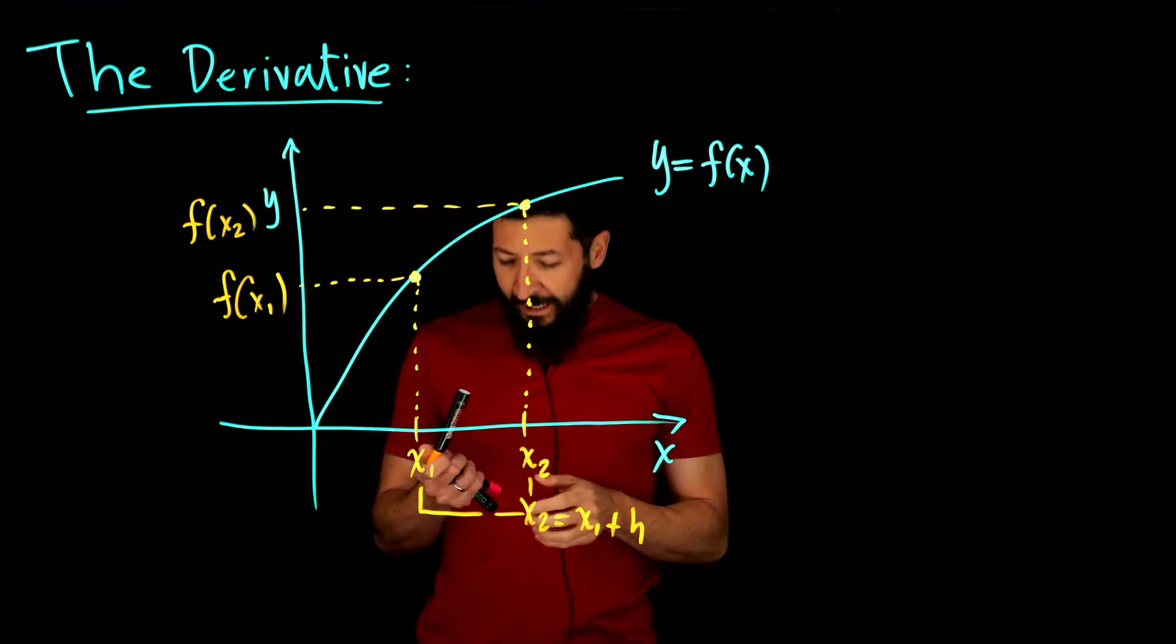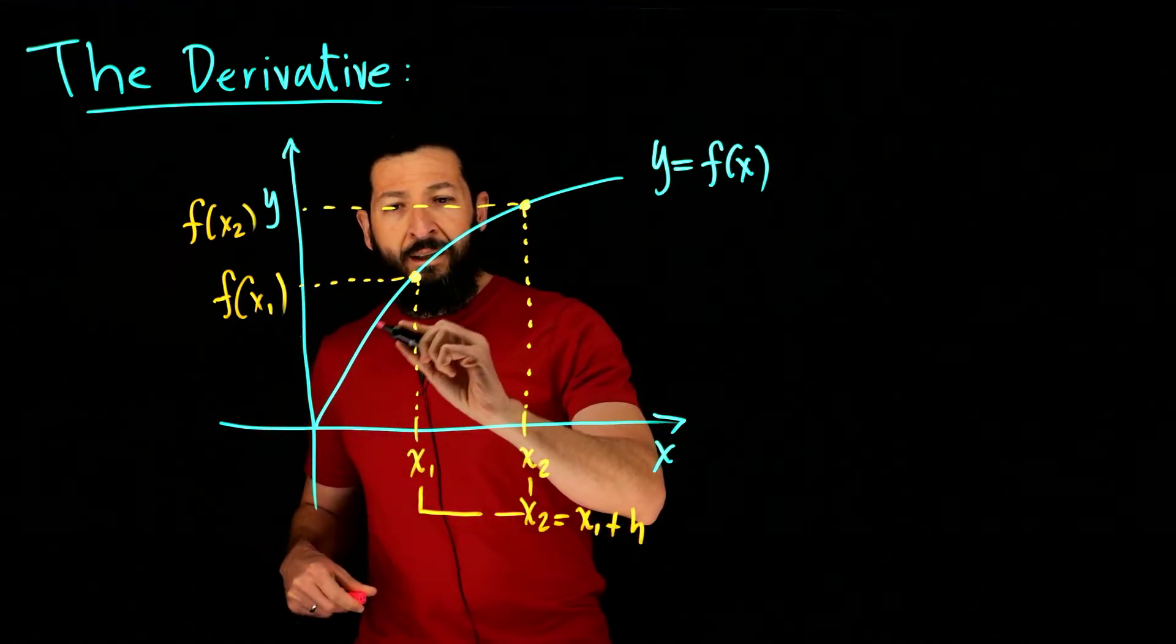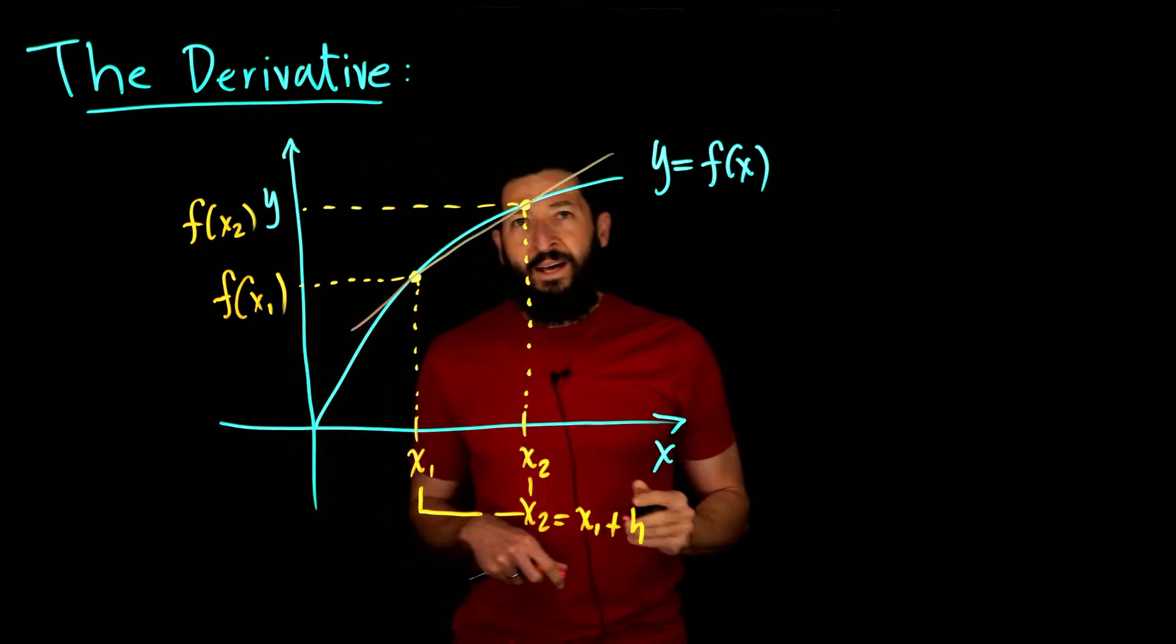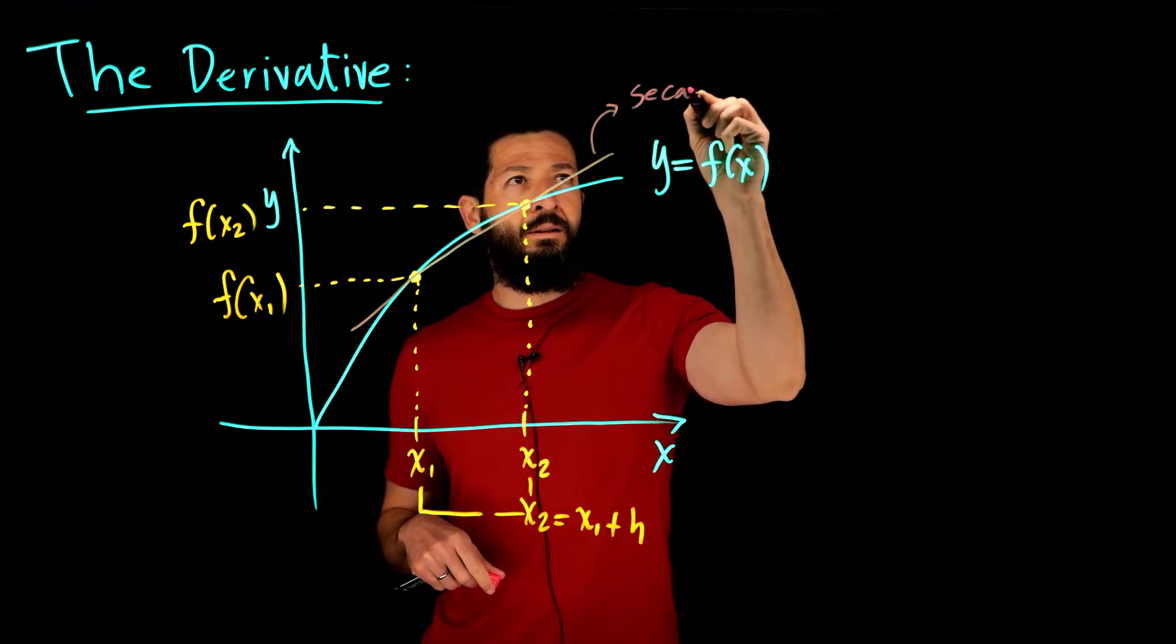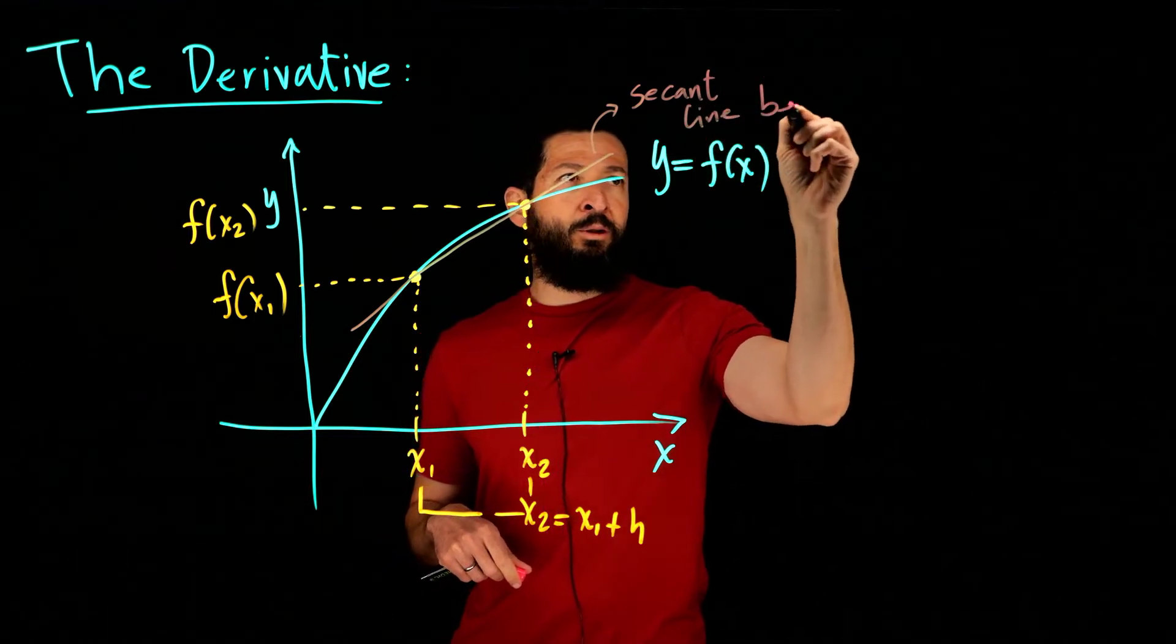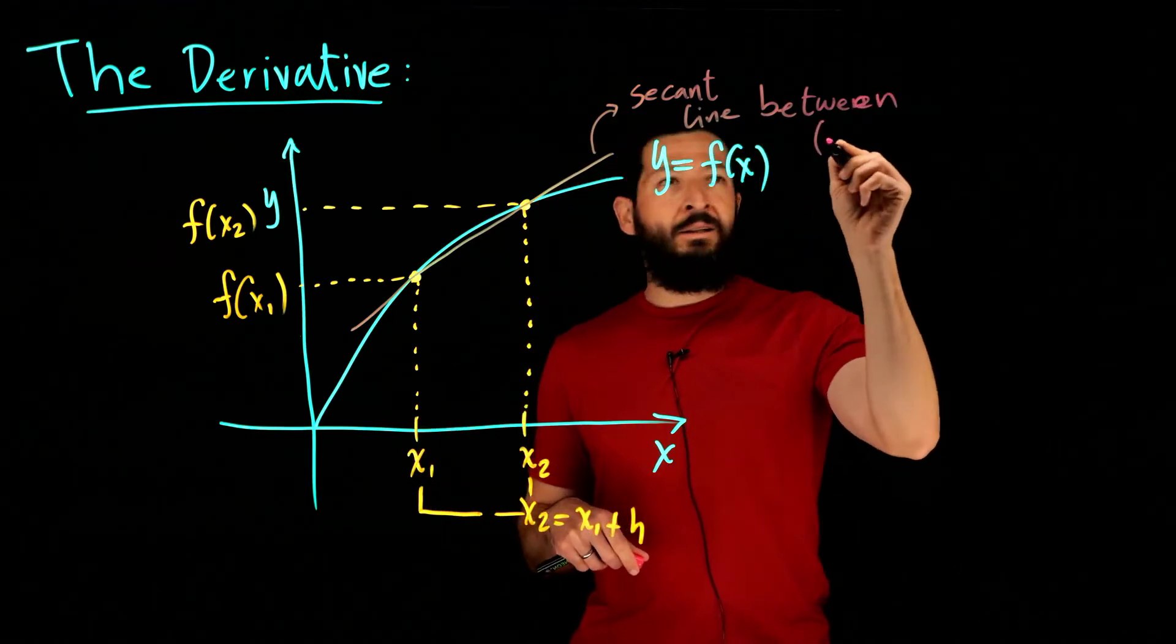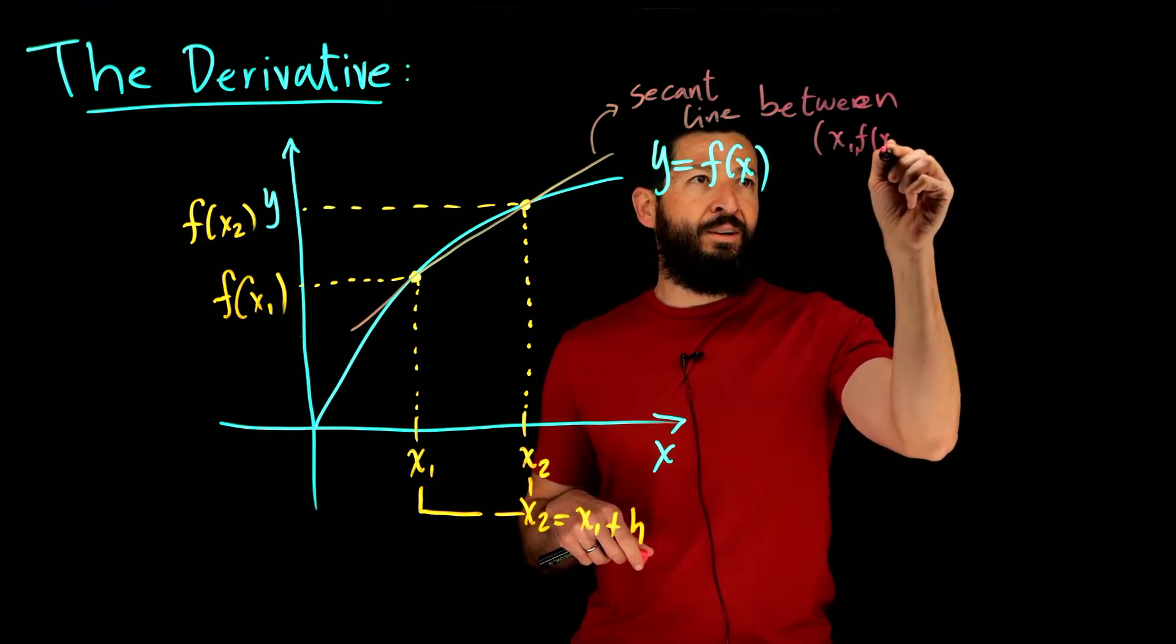Now we can think about the line that goes through this point and through this point. That is going to be called the secant line, between the two points x1 comma f of x1 and